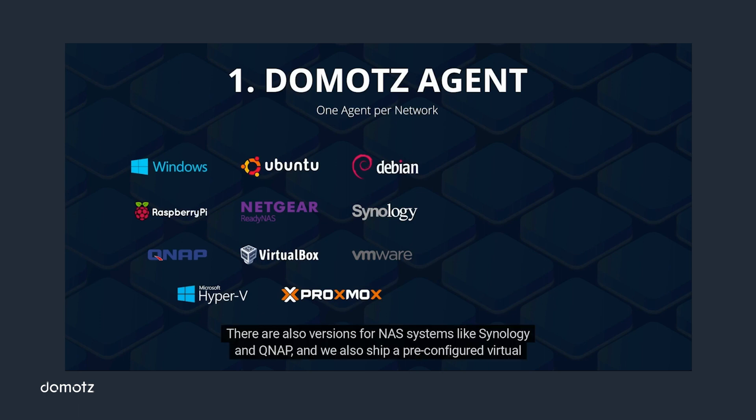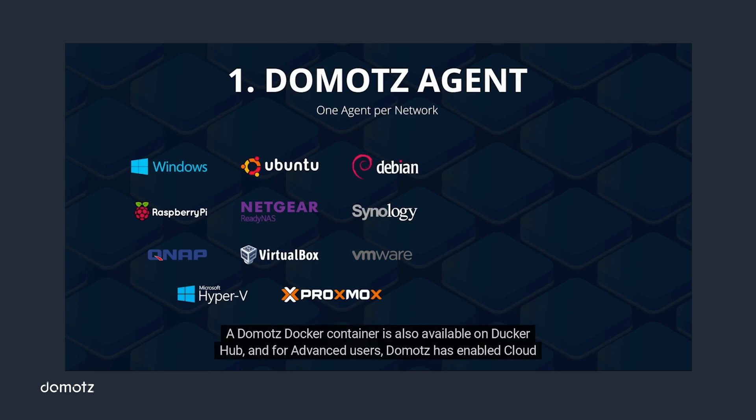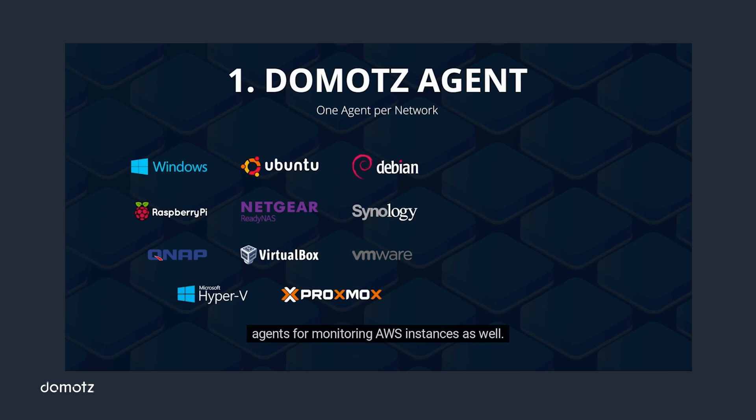There are also versions for NAS systems like Synology and QNAP, and we also ship pre-configured virtual machine images for hypervisors such as VirtualBox, VMware, Hyper-V, and Proxmox. A Domotes Docker container is also available on Docker Hub. For advanced users, Domotes has enabled cloud agents for monitoring AWS instances as well.